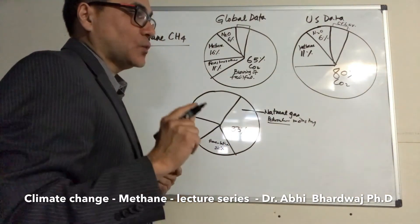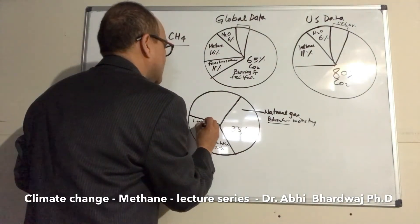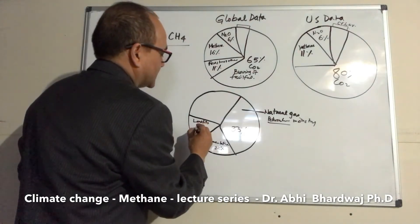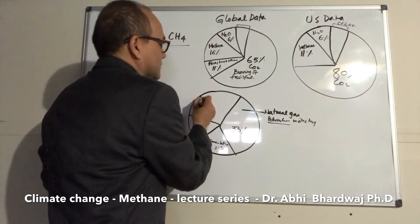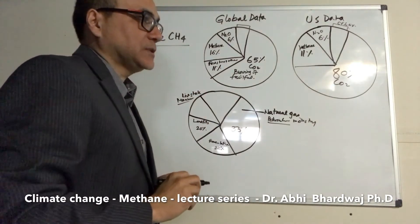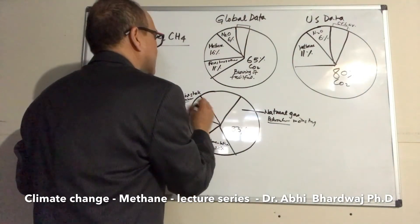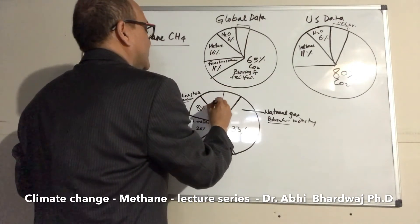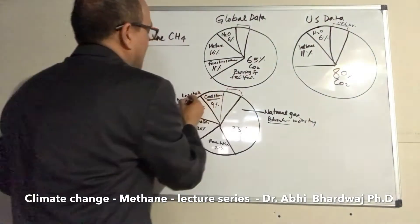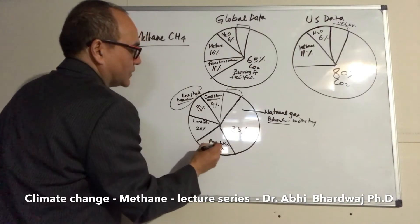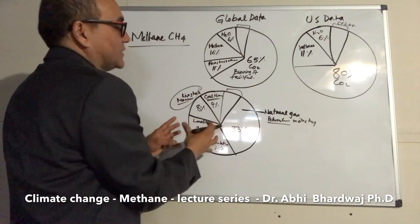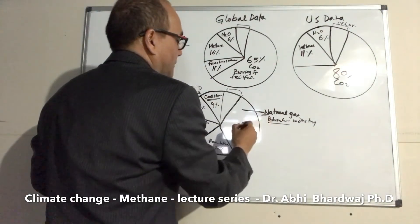Landfills are also a major source — all the garbage dumped at landfill sites decomposes and produces a lot of methane gas, accounting for about 20%. Livestock and livestock manure contribute about 8%, and coal mining contributes roughly 9%. When you combine fermentation, livestock, and agriculture together, most of this is preventable.